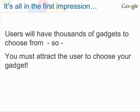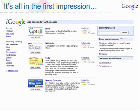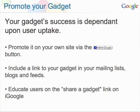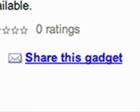Remember, users will have thousands of gadgets to choose from in the gadget directory, so you must attract a user to your gadget when they are browsing. Some key ways to do so: find a catchy title for your gadget — make it short and descriptive so a user knows exactly what your gadget does. Design an attractive thumbnail and screenshot, as images may be the only thing that attracts the user. Once it's listed on the iGoogle directory, get to work on promoting your gadget. On your own website, you can add the Add to Google button. There's also a Share a Gadget feature on iGoogle, which lets you send it to your friends.